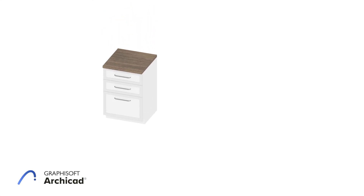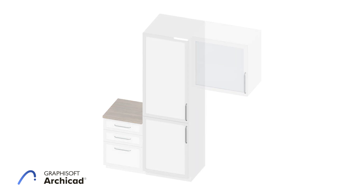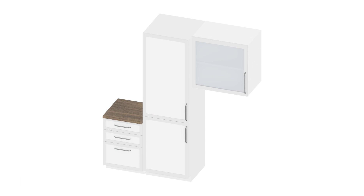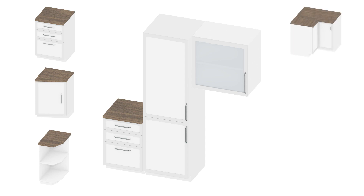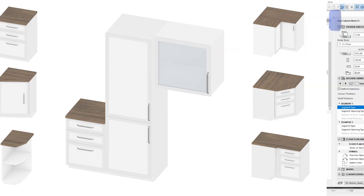Kitchen cabinet elements are grouped by their spatial arrangements into three main categories: base, standing, and wall. Cabinets are further grouped into different geometries, for example block, chamfered, closing, L, C, or S-shaped elements, making it easy to choose the one that best fits your project.